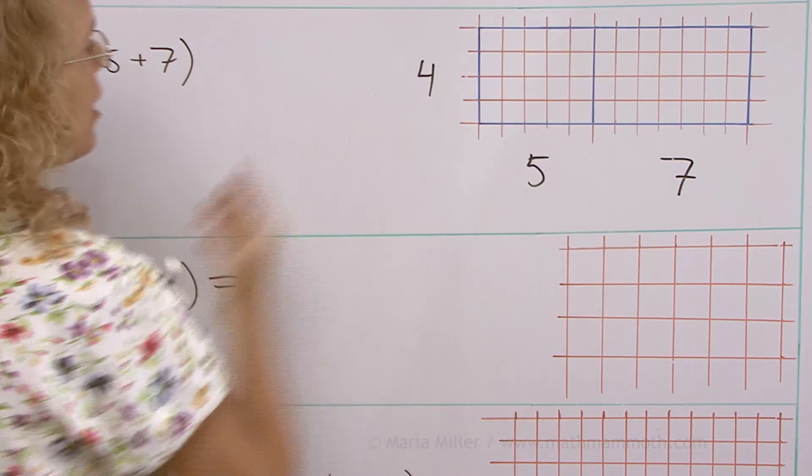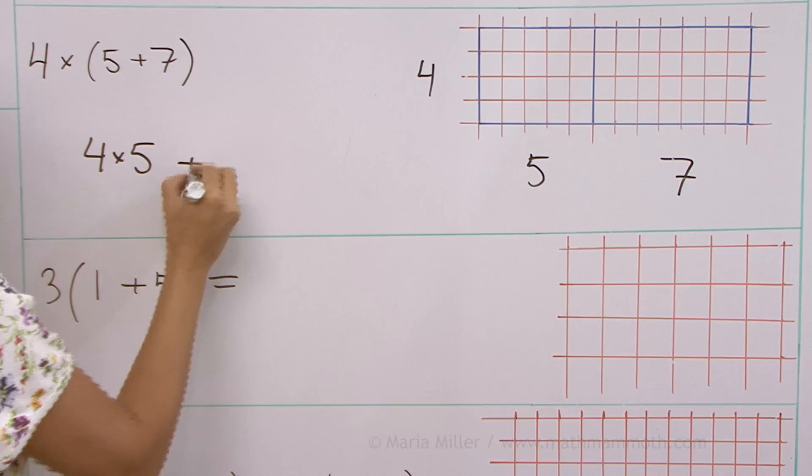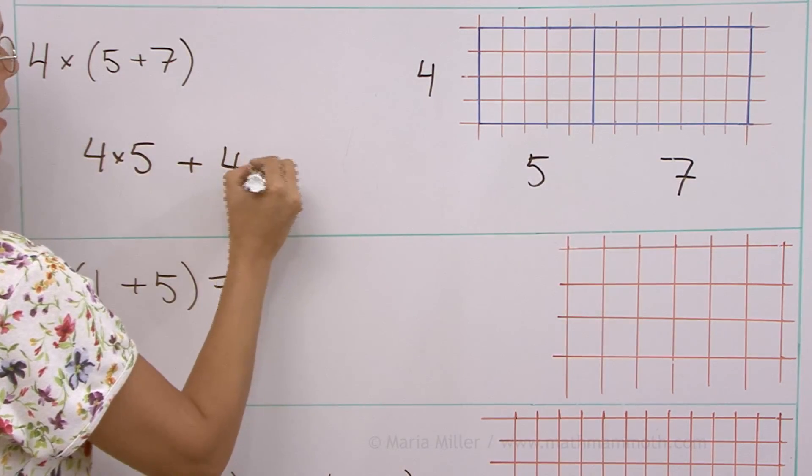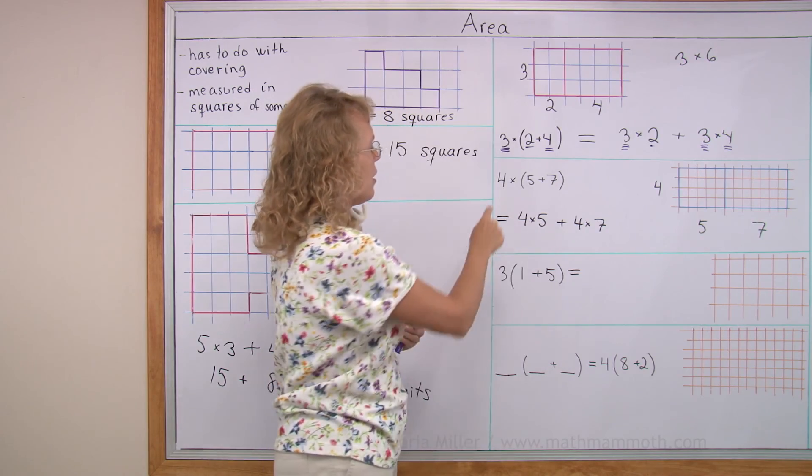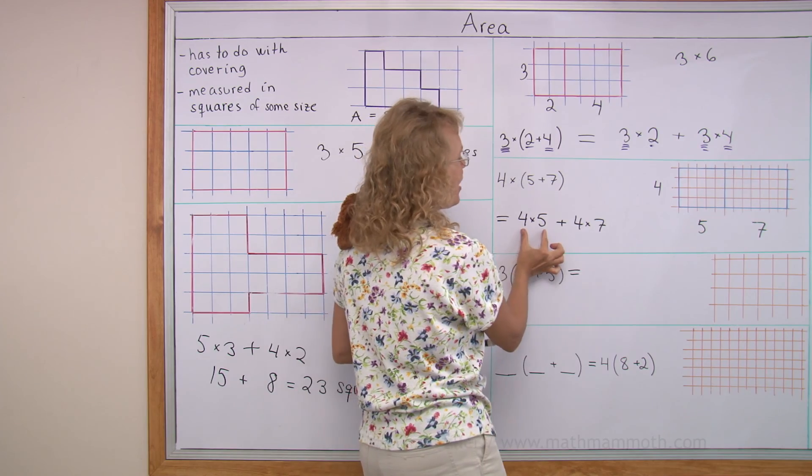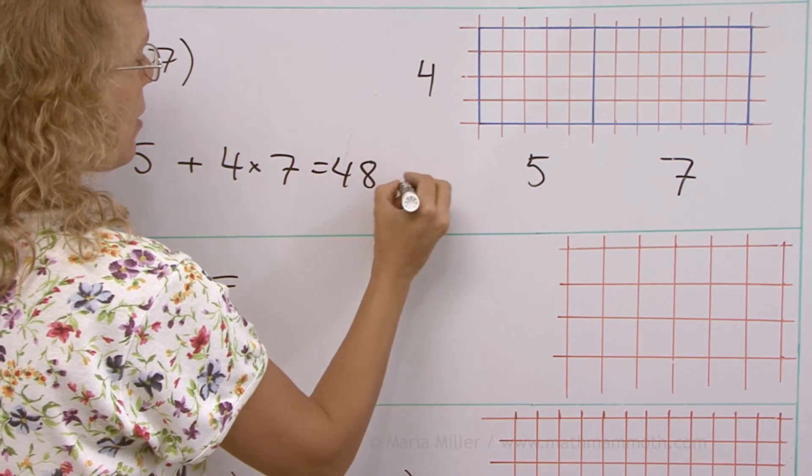And then the other way for the area is that I think of it as two rectangles. Here's a 4 times 5 rectangle. And then I add to that the other rectangle. This, this. 4 times 7 rectangle. Okay? And this equals that. And then I can calculate this. 20 plus 28. 48 squares.